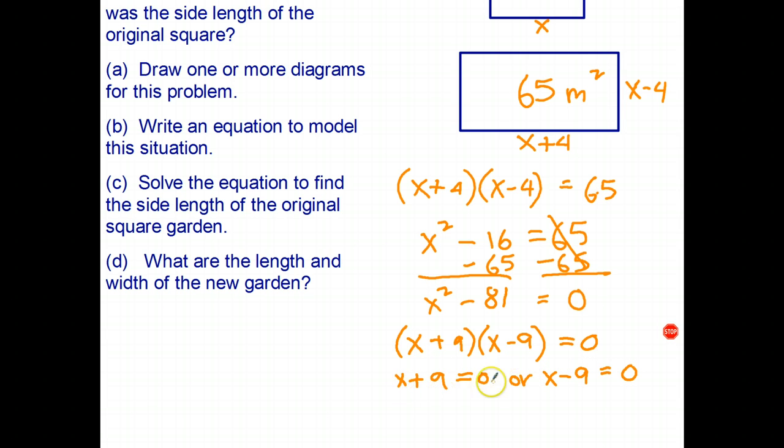That's the null factor law. Therefore X equals negative nine or X equals positive nine. At the moment I've ended up with two solutions, but this represents a real-life situation. It's not possible to have the length of a garden equaling a negative number, so the solution is X equals nine meters.